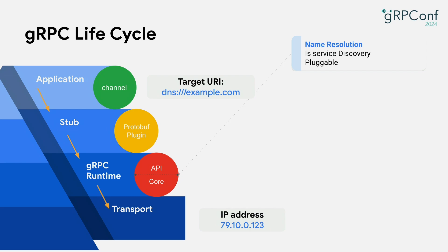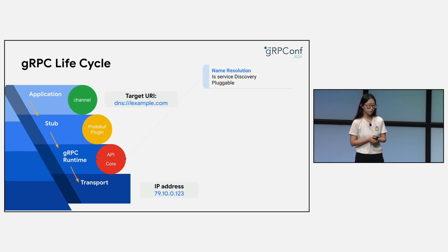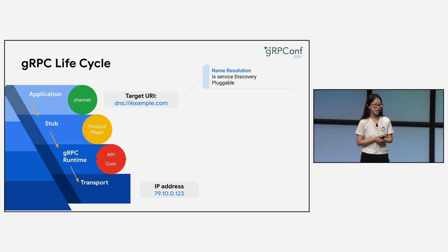The first thing gRPC will do is name resolution before it contacts the internet. Name resolution is often thought to be the same as DNS, but in practice it is often augmented with extensions or completely replaced. Fundamentally, name resolution is service discovery and it is pluggable. You can bring in a custom name resolver by specifying a schema, which you put as a prefix in the target URL string, and gRPC will do this mapping for you.